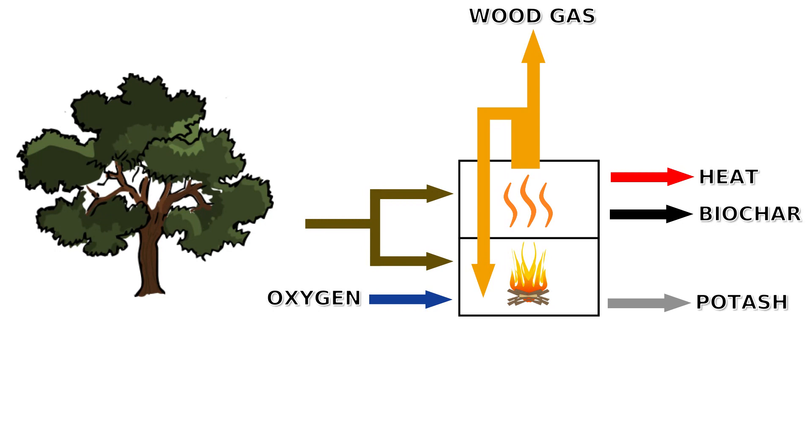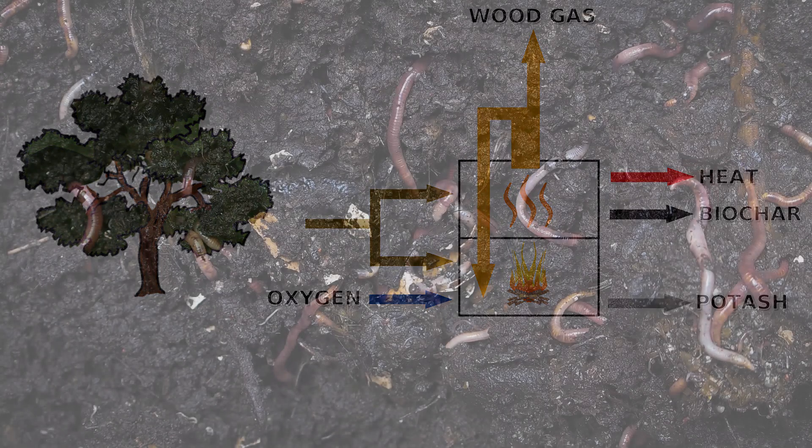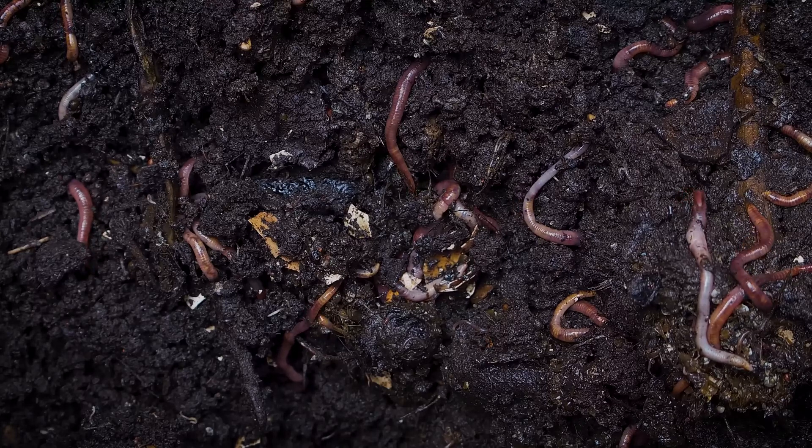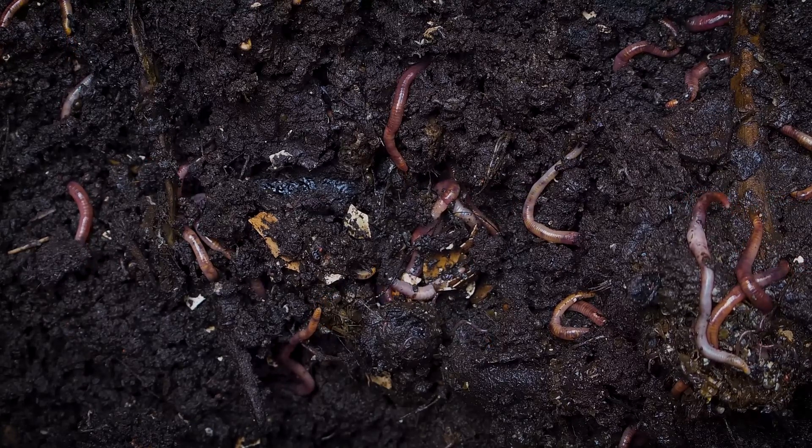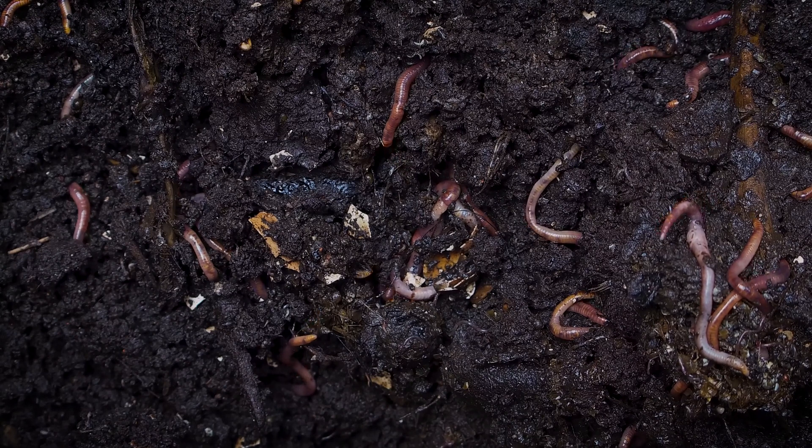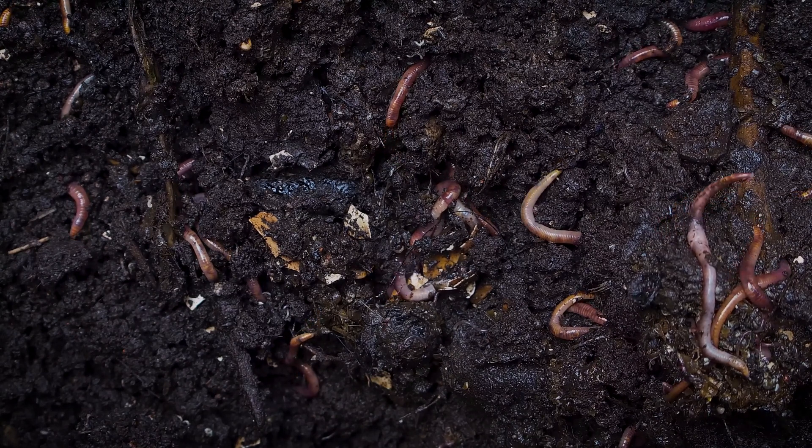The biochar captures about 30-50% of the carbon from the feedstock. Biochar is an almost pure carbon which can be used as a soil additive to improve the soil's ability to hold water and nutrients. Used in this way, the carbon will be safely sequestered for the long term.